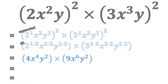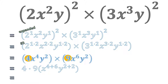Our calculations are not done yet — we still need to work out the final step. We multiply the coefficients together and add the powers of the same bases: x to the power of 4 plus x to the power of 6, and y squared plus y squared. This gives us 36x to the power of 10 y to the power of 4.